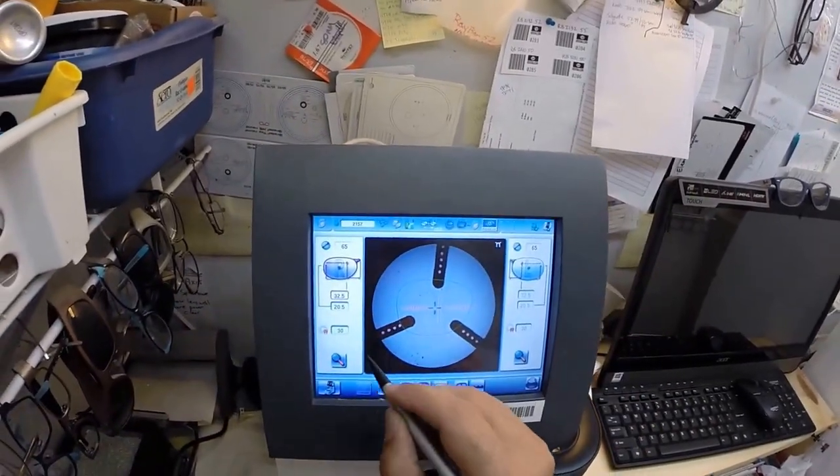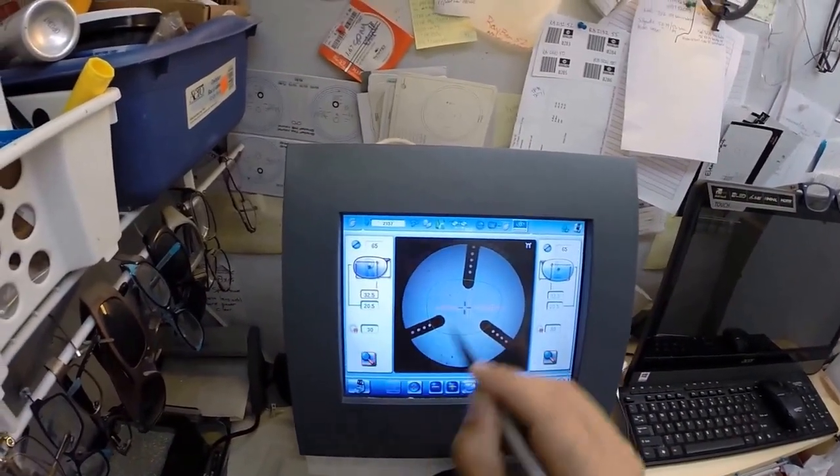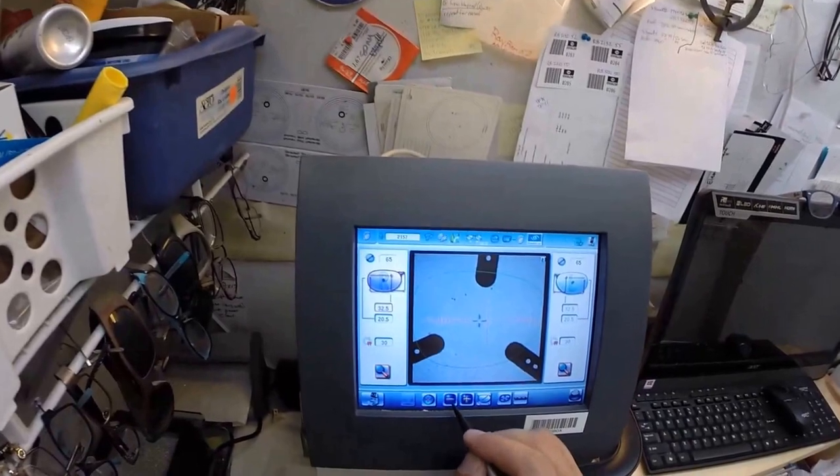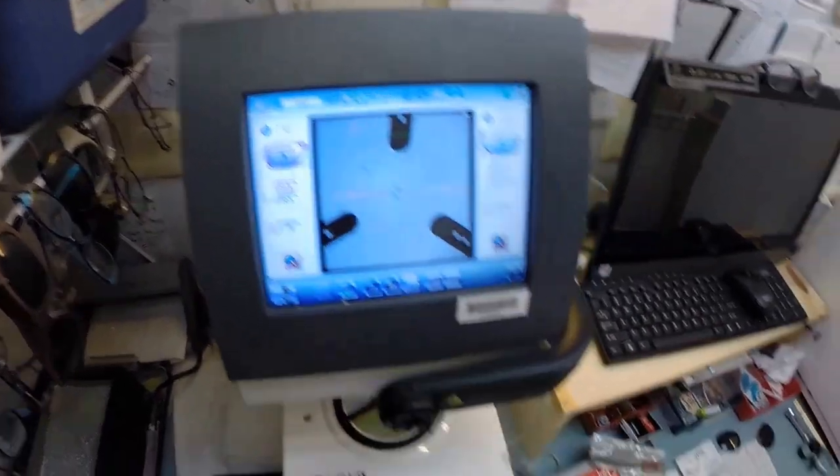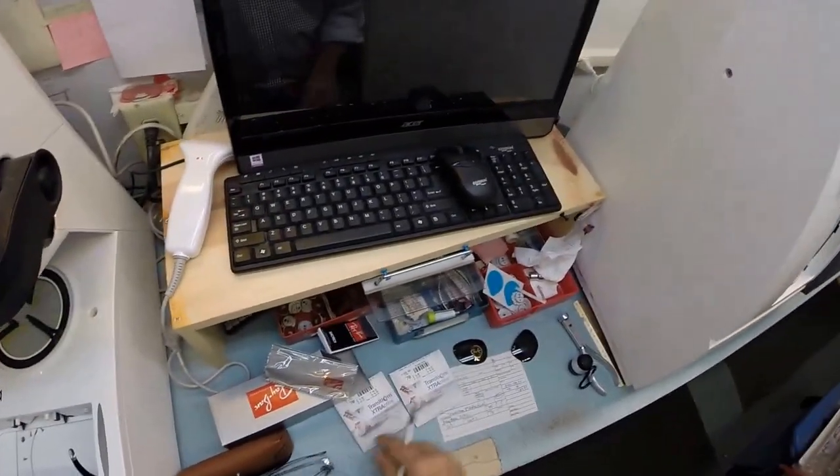That green outline - let me magnify - that is going to be the shape of your lens. Your pupillary distance is 63 in both eyes, that is 31.5, so I'm going to bring that down to 31.5 and let's go ahead and get your lenses prepped.